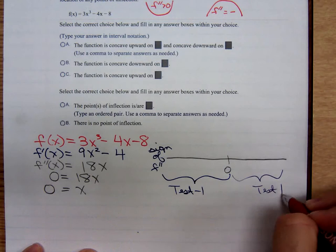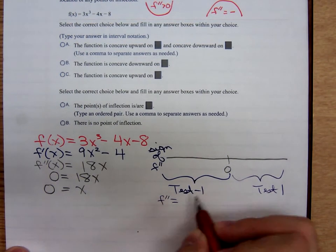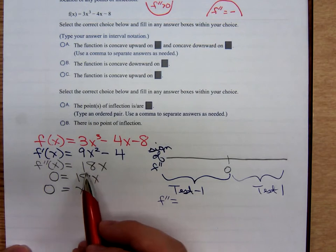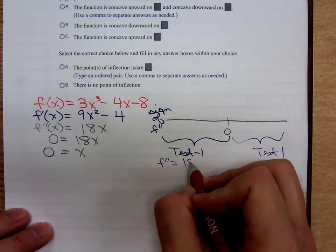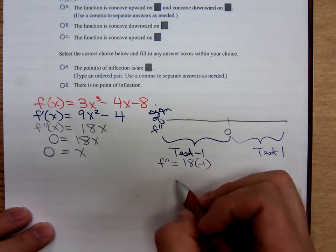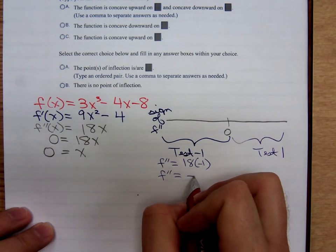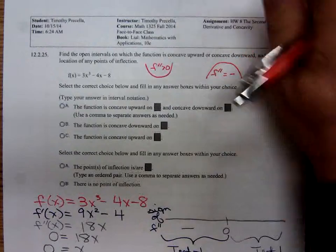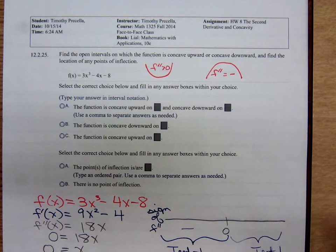So, we have f double prime at negative 1. Plugging in negative 1, we'd have 18 times negative 1. And the exact value doesn't matter. All that matters is that f double prime is negative. And if f double prime is negative,